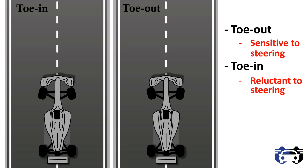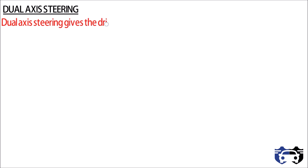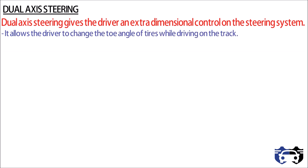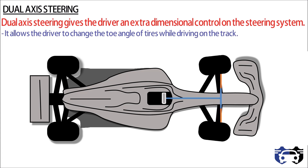Toe is something fixed by the designer and cannot be altered while driving. To allow changing toe angles while driving, Mercedes came up with DASS — Dual Axis Steering System. DASS gives the driver extra dimensional control on the steering system, allowing the driver to change the toe angles of the tires while driving. As the steering wheel is pulled towards the driver, the wheels have a tendency to toe in; if the steering wheel is pushed inwards, the wheels tend to toe out. This allows the driver to set zero toe for maximum straight-line speed and toe-out during cornering on tighter curves. Mercedes hasn't revealed how the mechanism actually works.